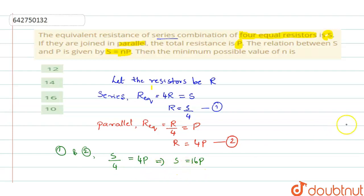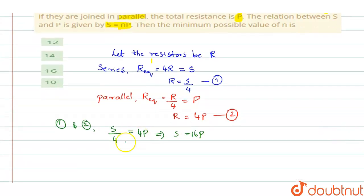So S is equal to 16P if you are taking, then compare with the equation which you have given here. They have given S is equal to N into P. So when you compare it, what will be the value of N you get? N will be equal to 16. So N value, the minimum possible value for N is 16.